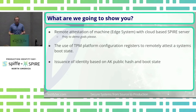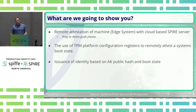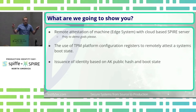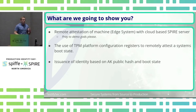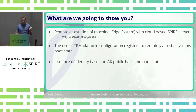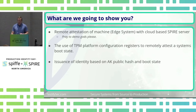So what are we going to show you today? I'm going to show you remote attestation of a machine or edge system with a cloud-based Spire server — cross your fingers, please pray to the demo gods now. We're going to use the TPM platform configuration registers to remotely attest that system, test the boot state, and then issue an identity to that system based upon the public hash of the attestation key and that boot state.